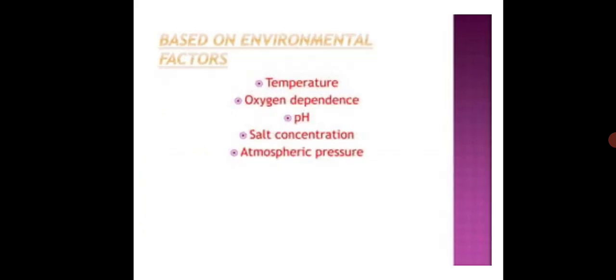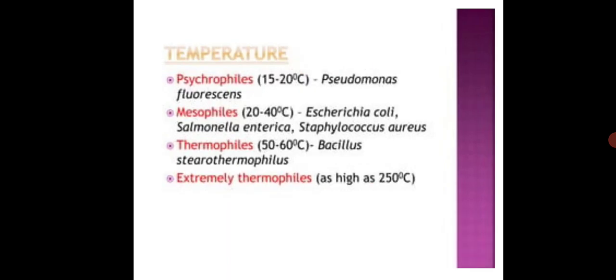Based on environmental factors: Temperature, Oxygen dependence, pH, Salt concentration, Atmospheric pressure. Temperature: Psychrophilic, Mesophilic, Thermophilic, Extremely thermophilic. Psychrophilic is 15-20 degree Celsius, for example Pseudomonas. Mesophilic 20-40 degree Celsius, for example E. coli, Salmonella, Staphylococcus. Thermophilic 50-60 degree Celsius.